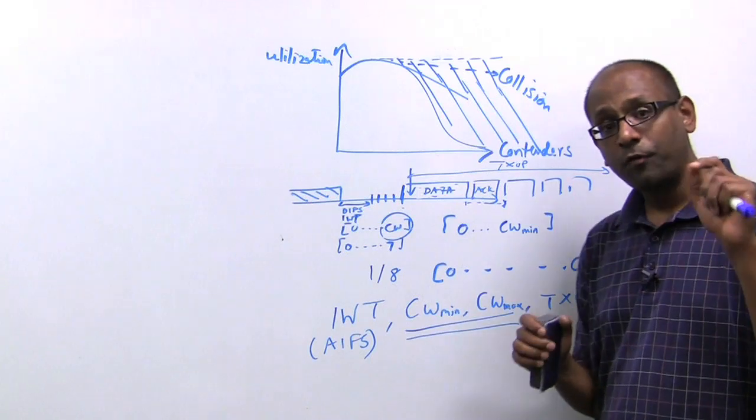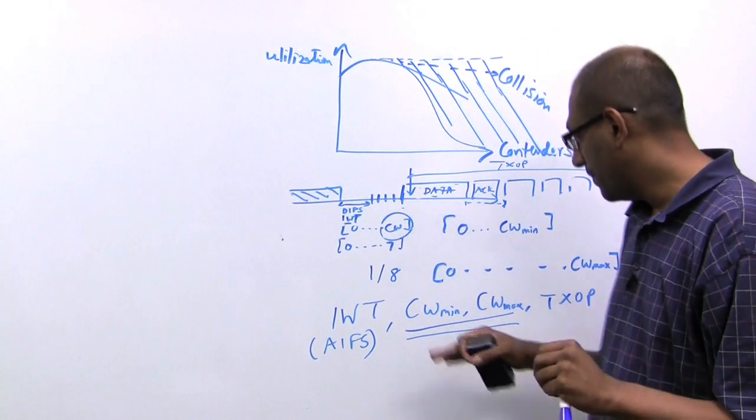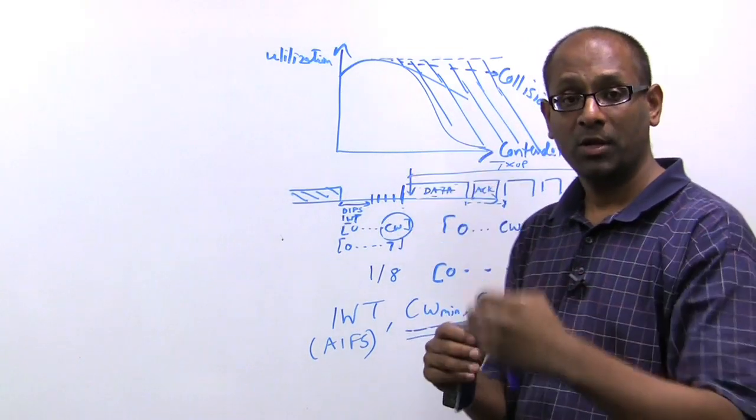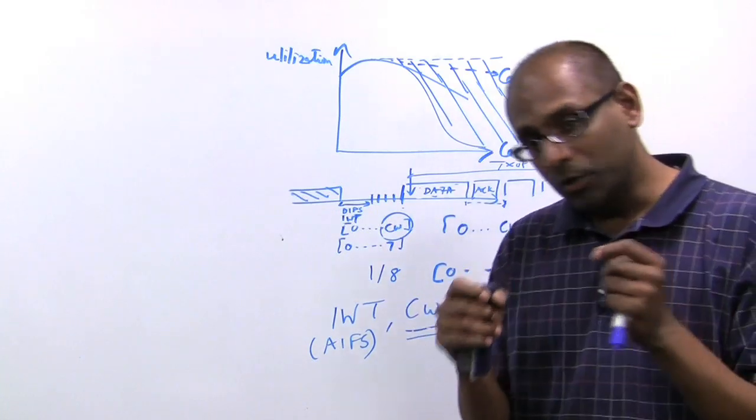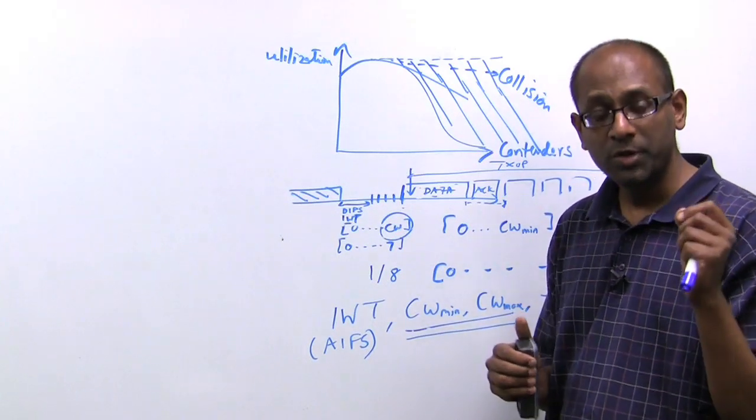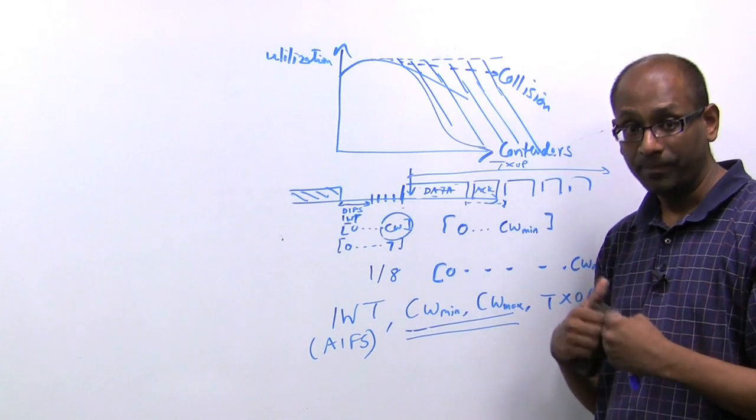So if you have four devices, you have the ability to say device one can get a low contention value, while device two will have a high one, if you want to give preferential access to device one over device two. The ability to manipulate these values on a per device basis is unique to Meru and is one of the key ways in which we are able to replicate switch-like behavior.